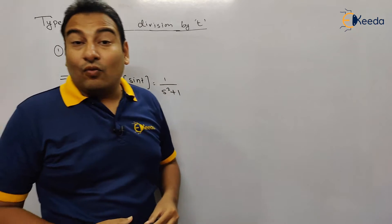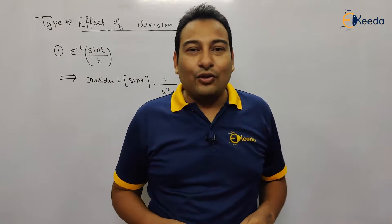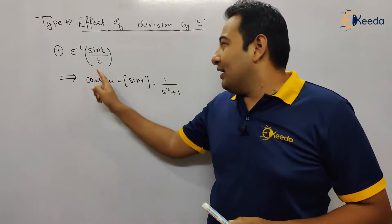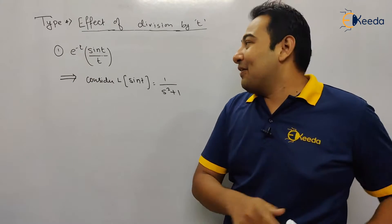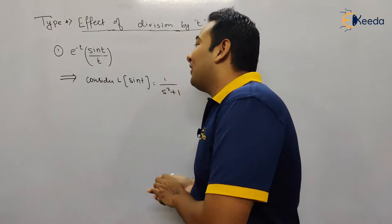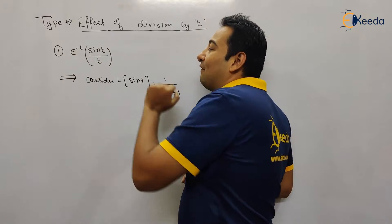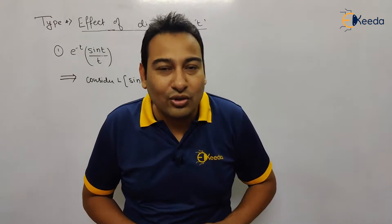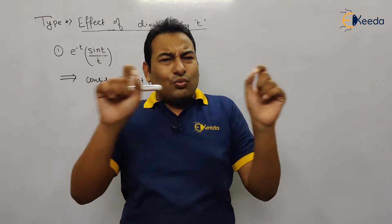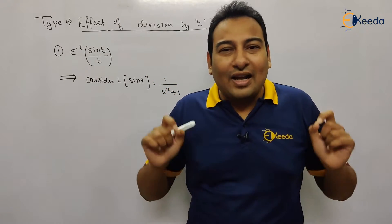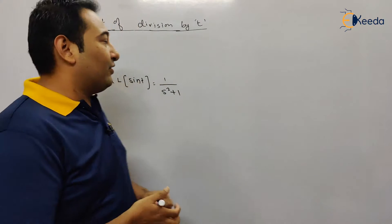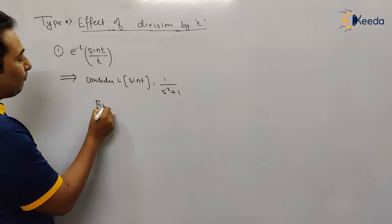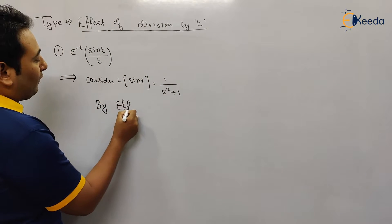Then what next? Which property you gonna remember first, division by t or FSP? Which one first? Yes, first of all you gonna apply effect of division by t and finally FSP, because I have dictated you a note in which this is very clear. Always apply FSP at the end, so FSP we are gonna apply at the end.